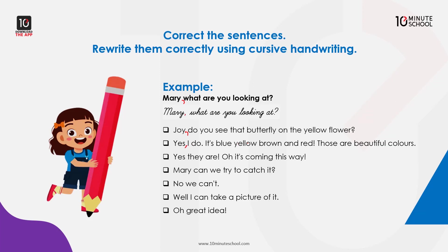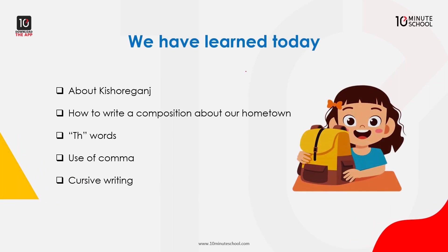It is blue, yellow, brown and red. Those are beautiful colors. Yes, they are. Oh, it's coming this way! Very — can we try to catch it? No, we can't.